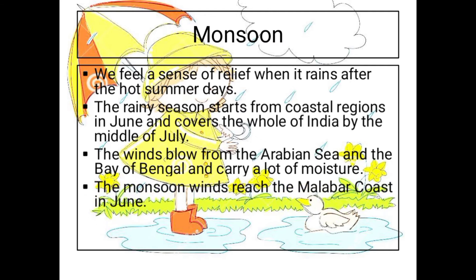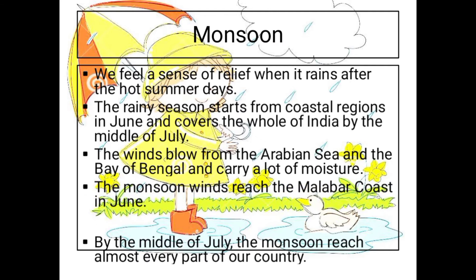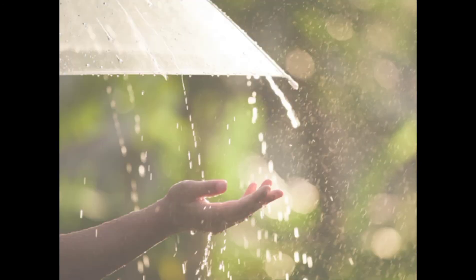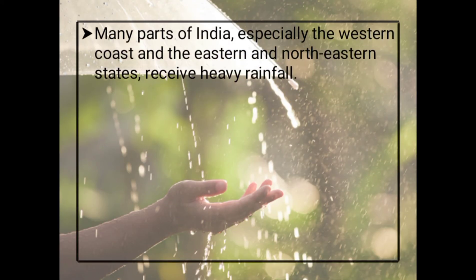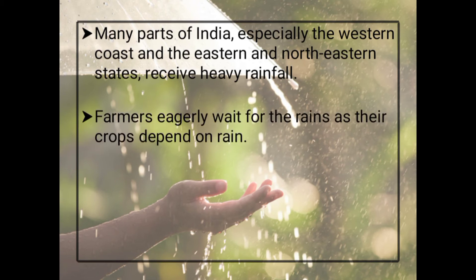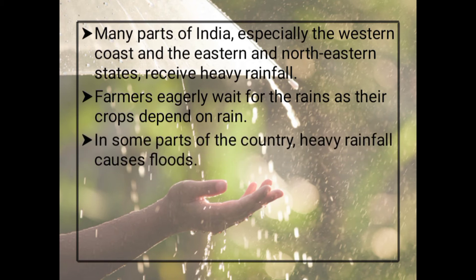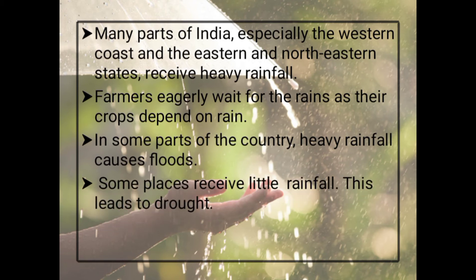The monsoon winds reach the Malabar coast in June. By the middle of July, the monsoon reaches almost every part of our country. Many parts of India, especially the western coast and the eastern and northeastern states, receive heavy rainfall. Farmers eagerly wait for the rains as their crops depend on rain. In some parts of the country, heavy rainfall causes floods, while some places receive little rainfall, leading to drought.